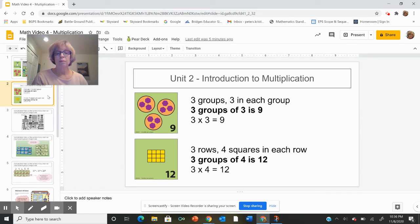In the array model, we'll say there's three rows and there's four squares in each row. So that's three groups of four is 12. And we can write that as three times four equals 12.